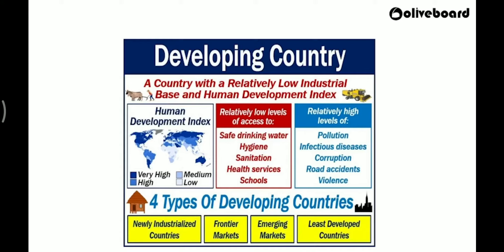Under developing countries, we have four categories: new industrialized countries, frontier markets, emerging markets, and least developed countries. New industrialized countries are where industrialization has taken place, GDP is growing, and production is going. Frontier markets and emerging markets are basically for investments. Classic examples are India and China as emerging markets. Frontier markets are better than least developed countries but still small, and you can make investments there.